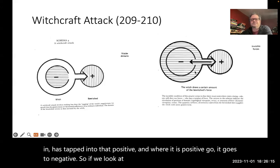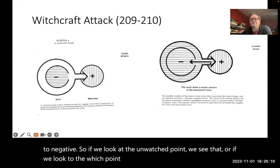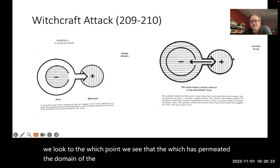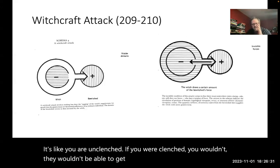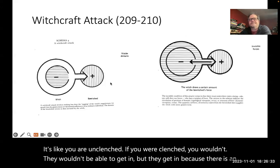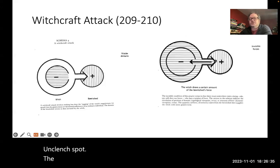So if we look to the witch point, we see that the witch has permeated the domain of the bewitched. So it's like there's holes in your soul. It's like you are unclenched. If you were clenched, they wouldn't be able to get in. But they get in because there is an unclenched spot. The witch inserts themselves, their psychic energy, into the individual.